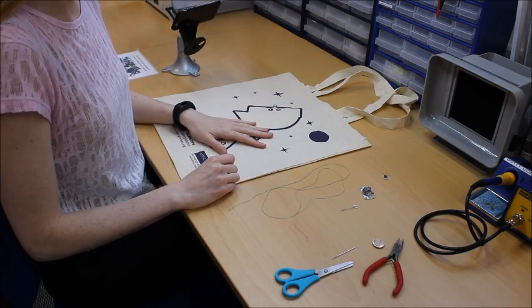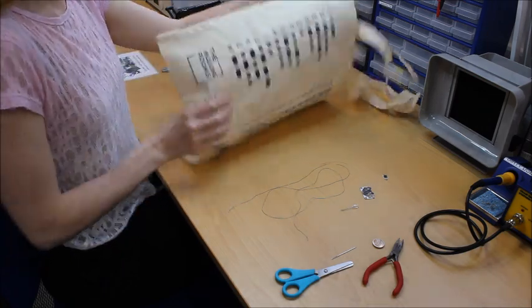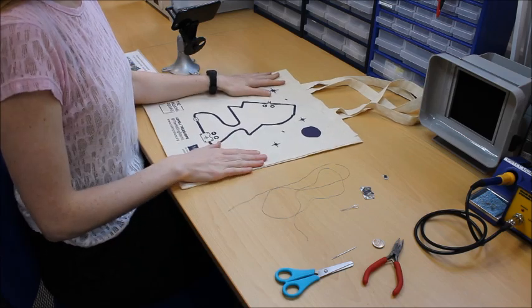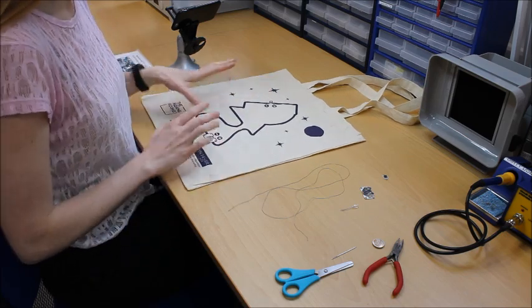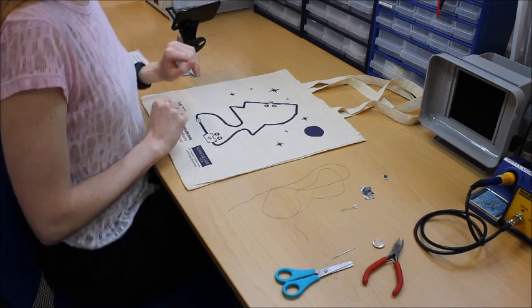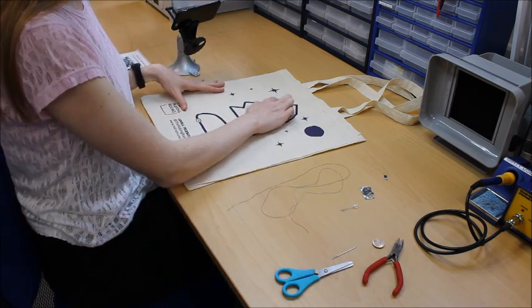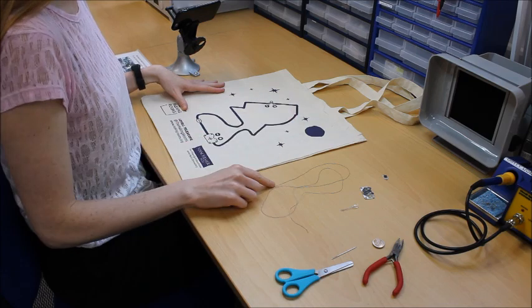I'm going to be describing how to turn our tote bag here that has Morse code on one side and an image of the Lovell telescope on the other into something that you can send Morse code with. We're going to be using conductive thread and electricity, and there will be an LED light with electricity flowing along the conductive thread.